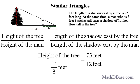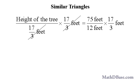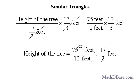Substituting in the numbers that we have, the height of a tree divided by 17 thirds feet is equal to 75 feet over 12 feet. Multiplying both sides of the equation by 17 thirds feet to isolate the height of the tree on the left side, then cancelling to simplify the right side, we get the mixed recurring decimal 35.416 continuous feet, which is equal to 35 and 5 twelfths feet.